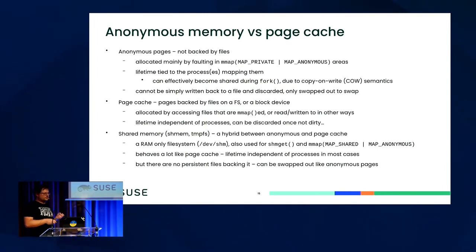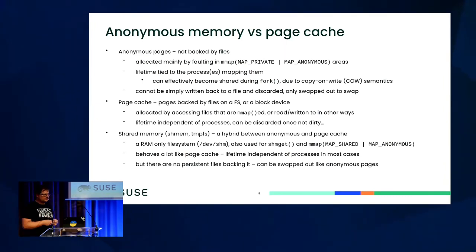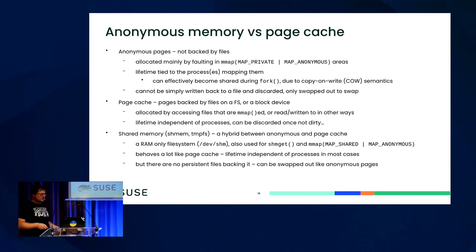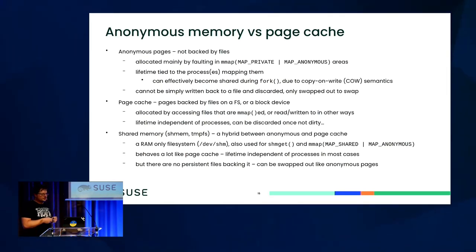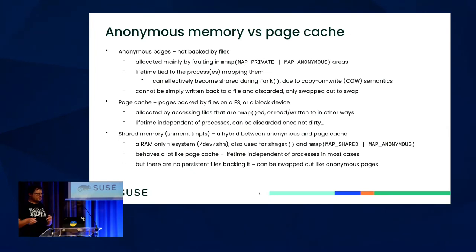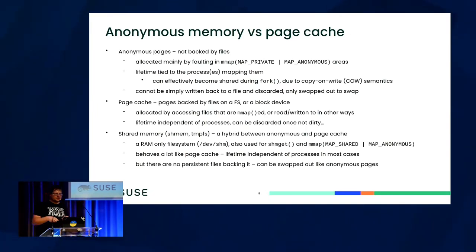If memory is so low that we need to get rid of anonymous pages, they have to be swapped out to swap partitions or files, because there are no real files on the filesystem that would hold the data. We also have the page cache, which the kernel tries to keep around if possible — it's all pages backed by files on a filesystem. The Buffers part describes page cache related to block devices — like if you dd to/from a block device, you might be creating pages of this type.